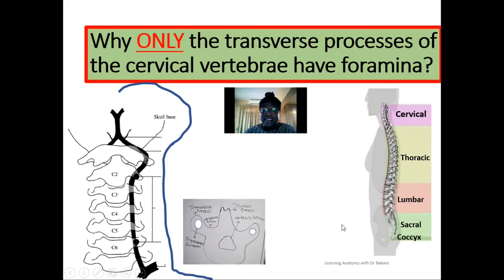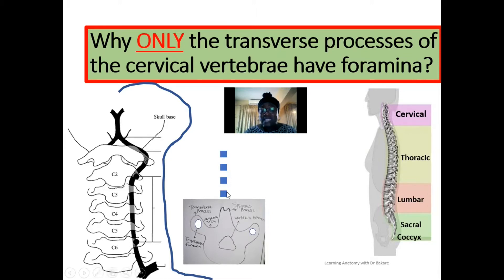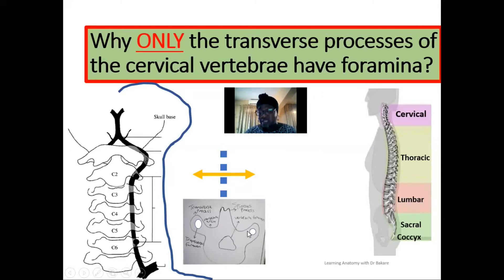Looking at the general configuration of the vertebral bone, they have a spinous process that is an extension from the body, seen along the median plane — this is the spinous process. Transversely, we have the transverse processes, and these processes are aligned in the transverse plane, which is why they are called the transverse processes.